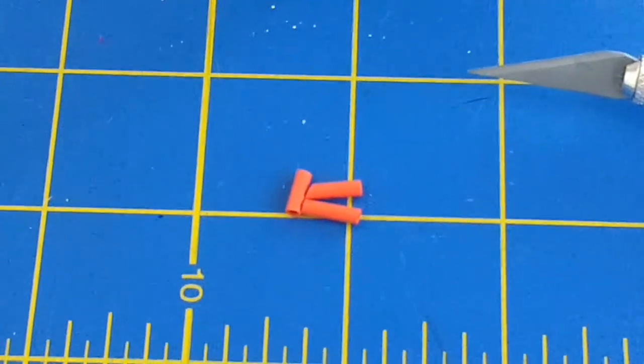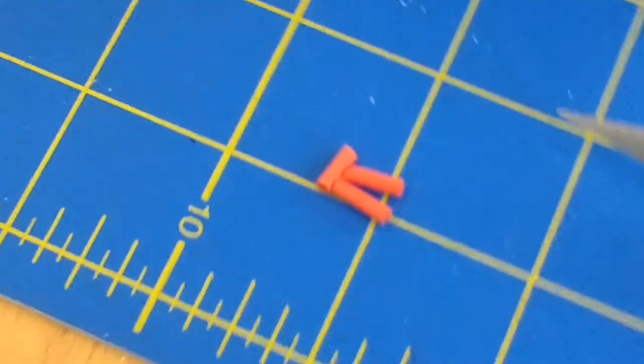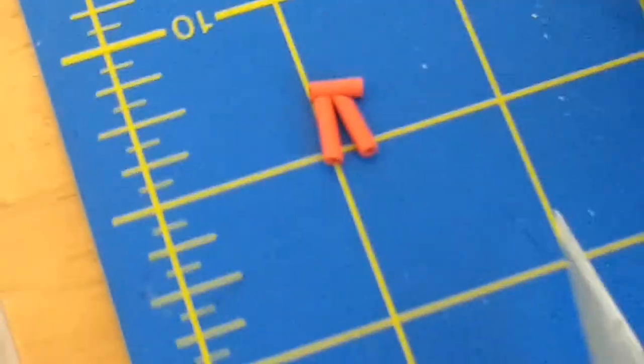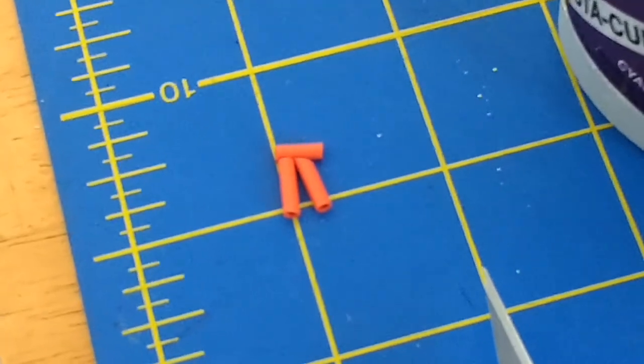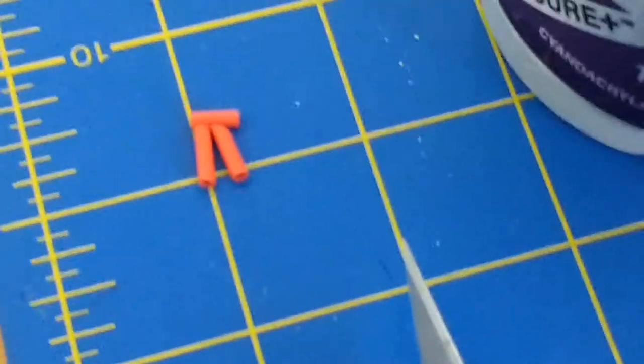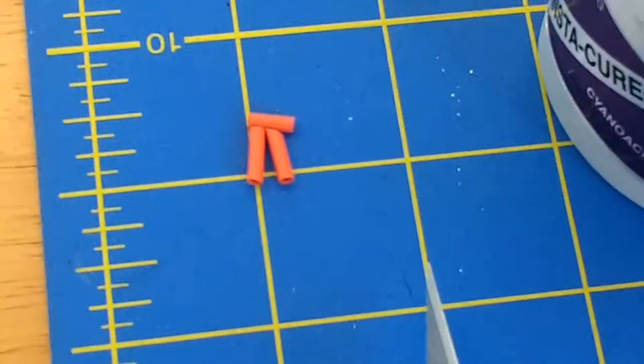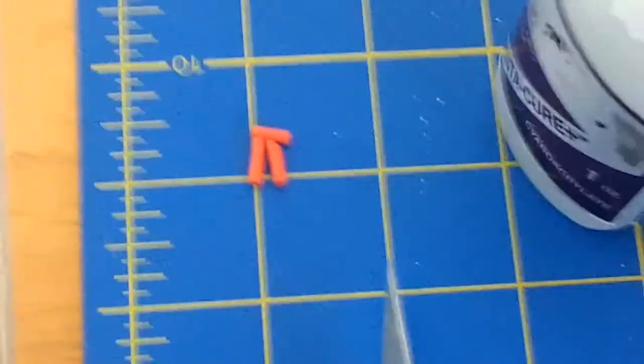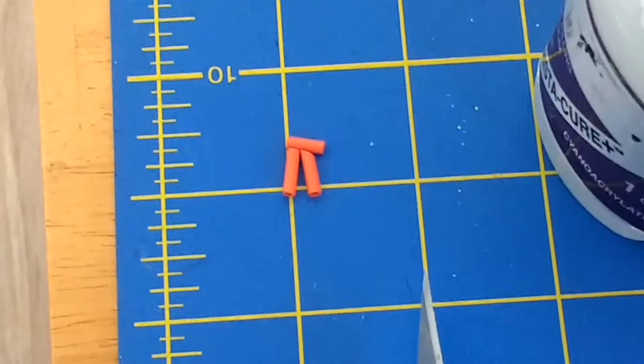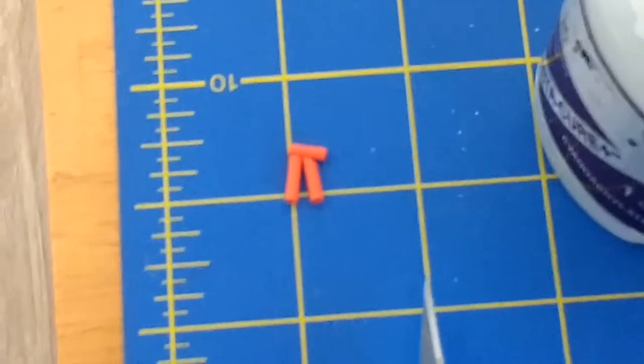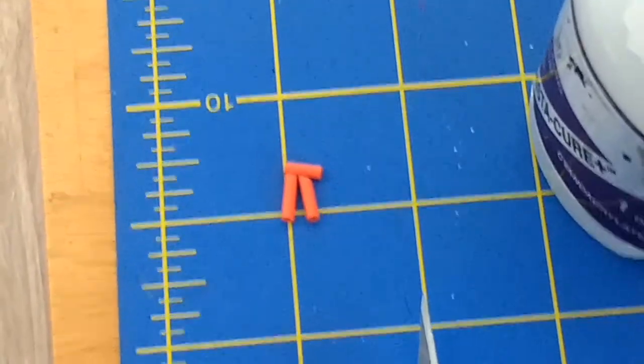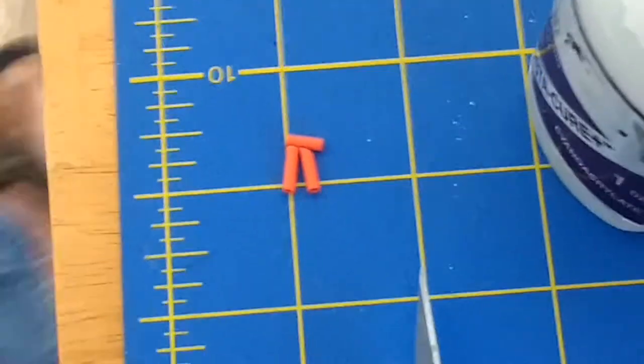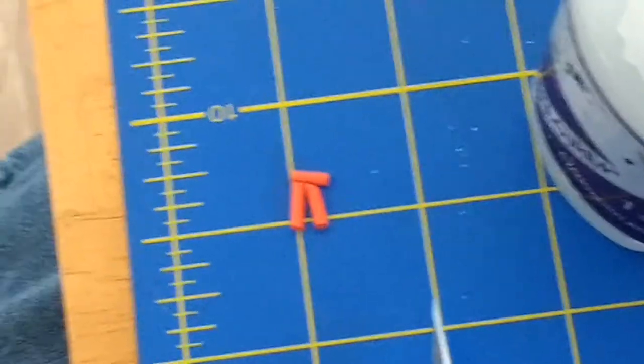But you can certainly make these the way I'm showing you in this video. And what you're seeing here are a couple pieces that I've cut to about three-eighths of an inch. These are to fit two millimeter carbon rods, for example. It's better to cut them longer and assemble them with the proper angles. It just makes it easier to work with that way.